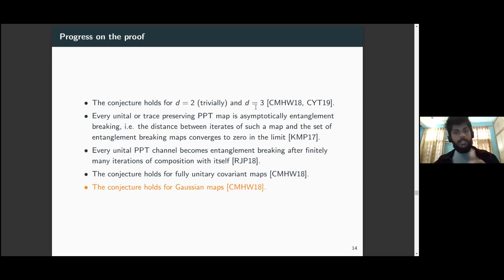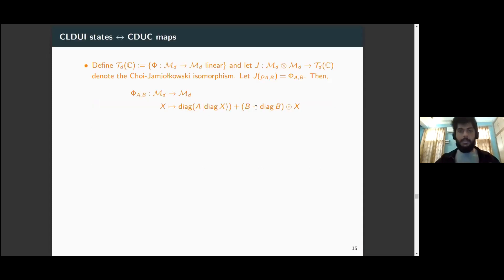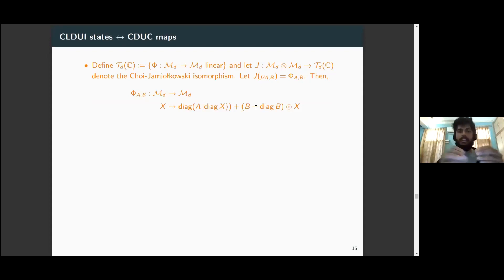We also know the conjecture holds for fully unitary covariant maps — the well-known Holevo-Werner channels — and for a specific class of maps in infinite dimensions known as Gaussian maps. The preferred language for stating results on the PPT squared conjecture is that of linear maps between matrix algebras, but since our discussion has been in the setting of bipartite matrices, we state the main result in that language, noting that the Choi-Jamiołkowski isomorphism allows translation between the two settings.